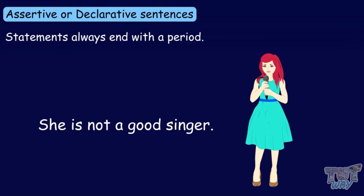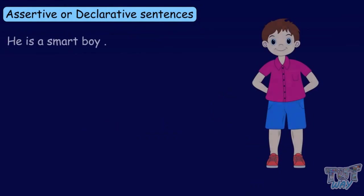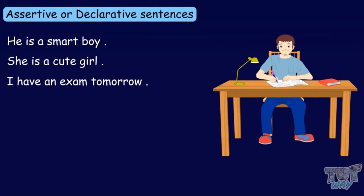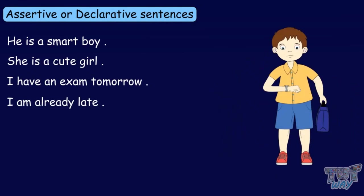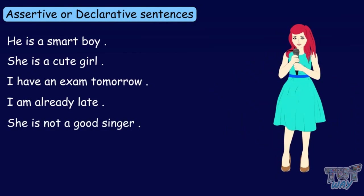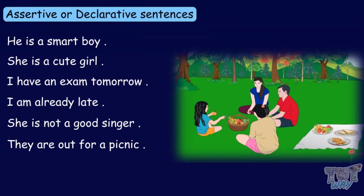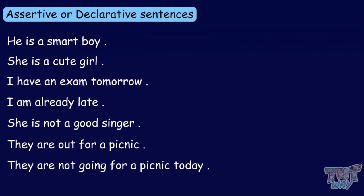Statements always end with a period. For example: He is a smart boy. She is a cute girl. I have an exam tomorrow. I am already late. She is not a good singer. They are out for a picnic. They are not going for a picnic today. All these are simple statements that end with a period.